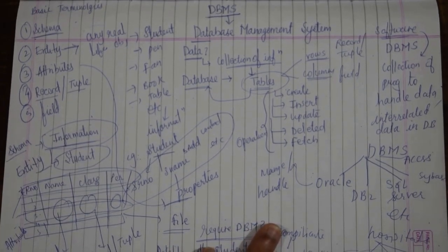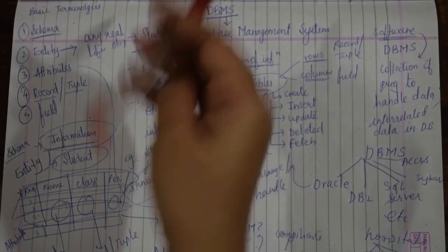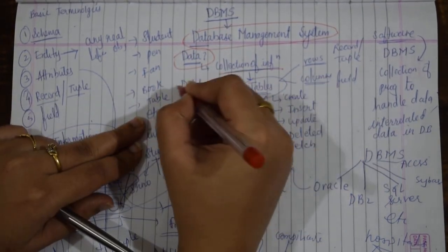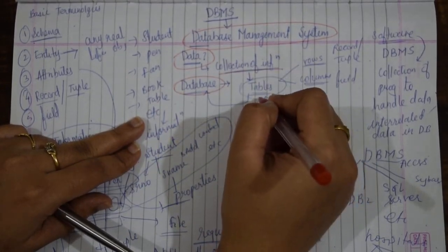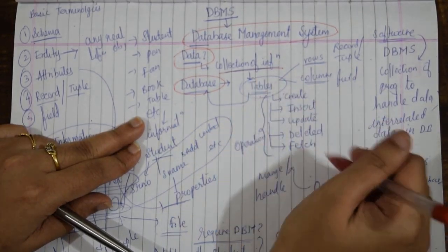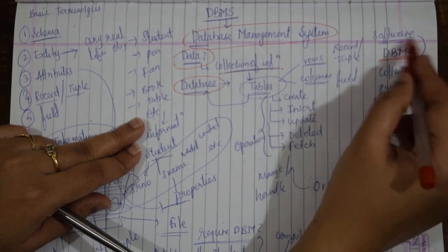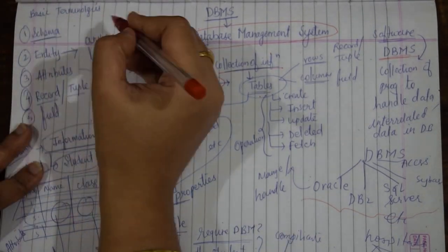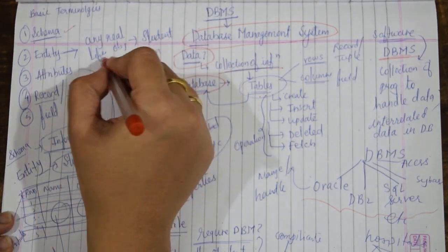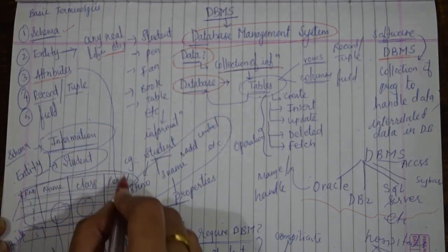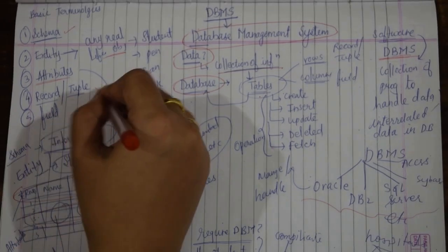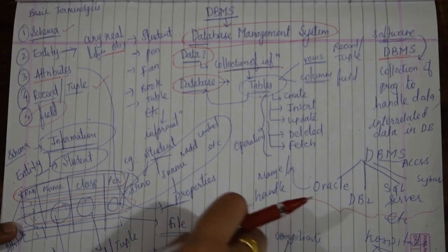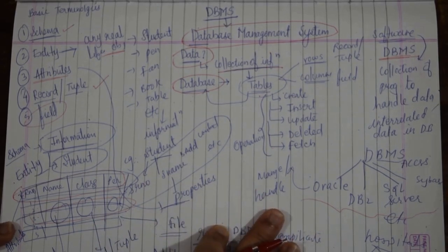Quick revision: DBMS stands for Database Management System. Data is a collection of information. A database is a collection of this information in the form of tables. You can perform different operations on your database with the help of DBMS. DBMS is a software. We also covered basic terminologies: schema, entity (any real-life object), attributes (properties of an entity), record or tuple (a row in a table), and field (a column in a table). We also saw why we require and where we can use DBMS. Thank you.